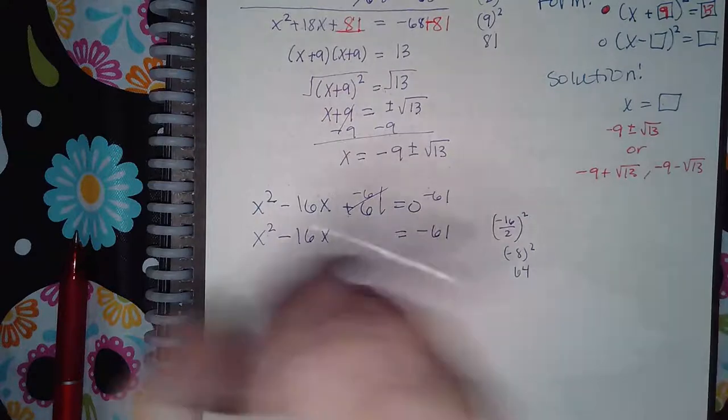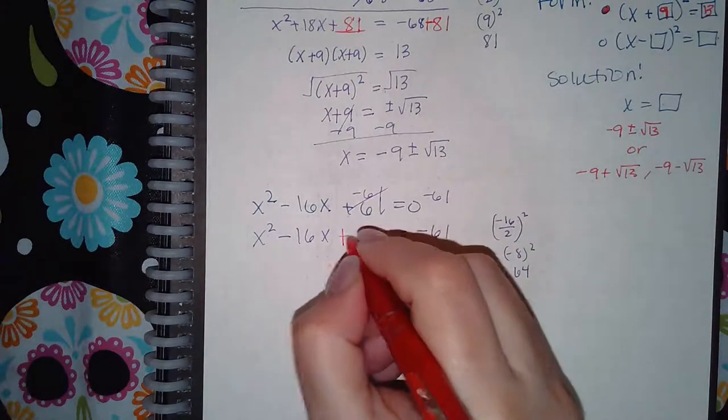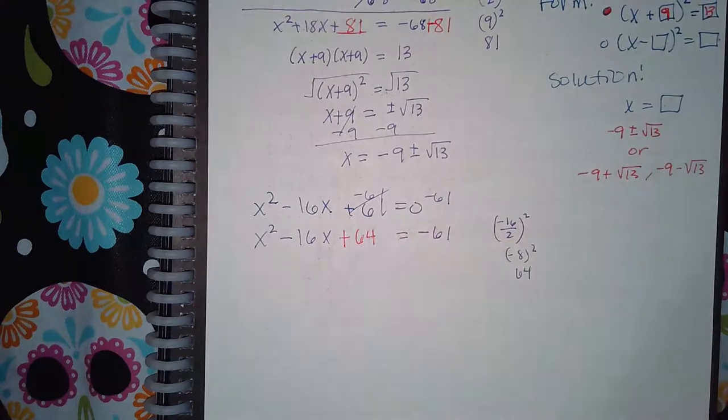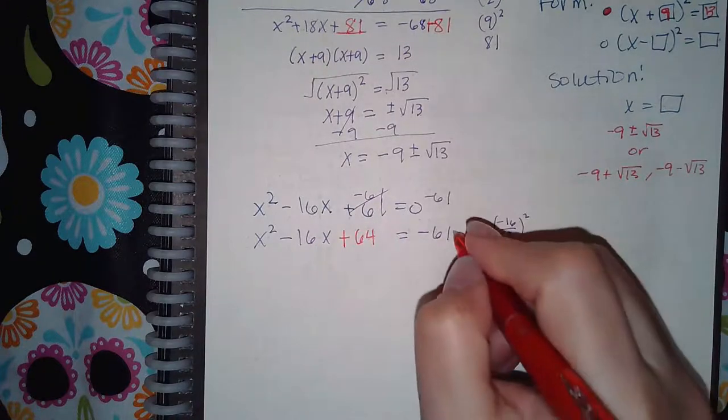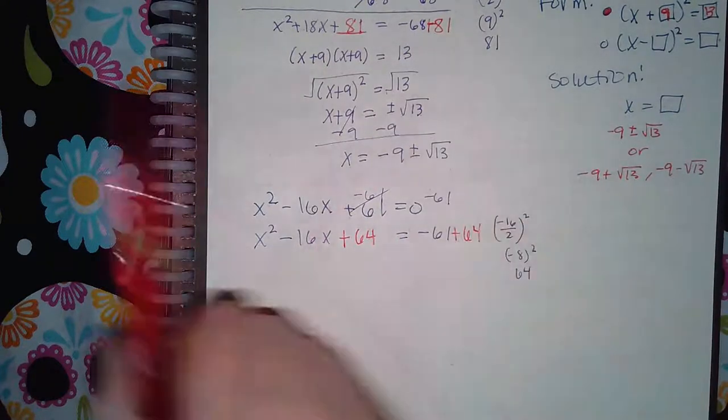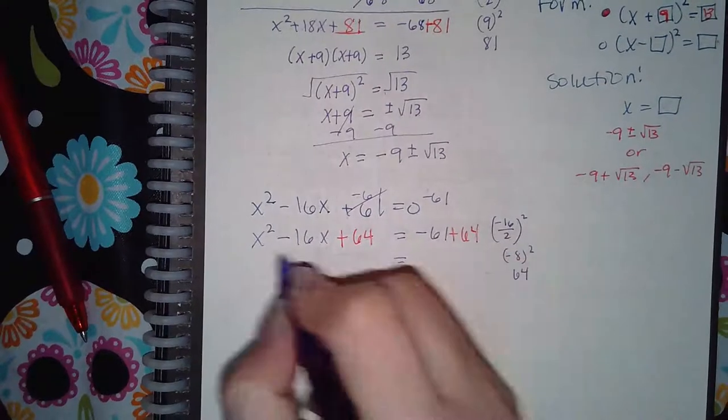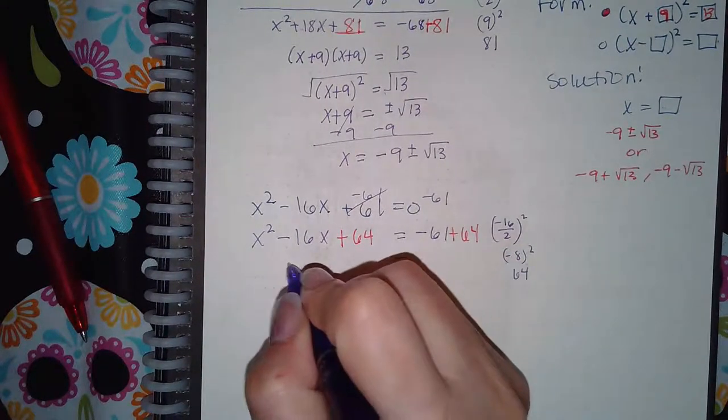So I'm going to have to add 64 to the left side to complete the square. But whatever I do to the left side of an equation I have to do to the right side of an equation, so I have to add 64 over there as well.